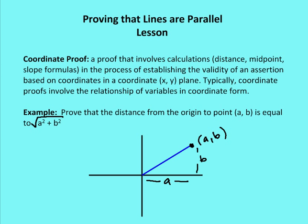I also want to talk about coordinate proofs. In the book, they're going to slip in a couple of coordinate proofs, and I want to explain what a coordinate proof is before you address those problems for your homework. A coordinate proof is a proof that involves calculations — it could be a distance formula, midpoint, or slope formula — and it establishes the validity of an assertion based on coordinates in a coordinate plane, so an xy plane.